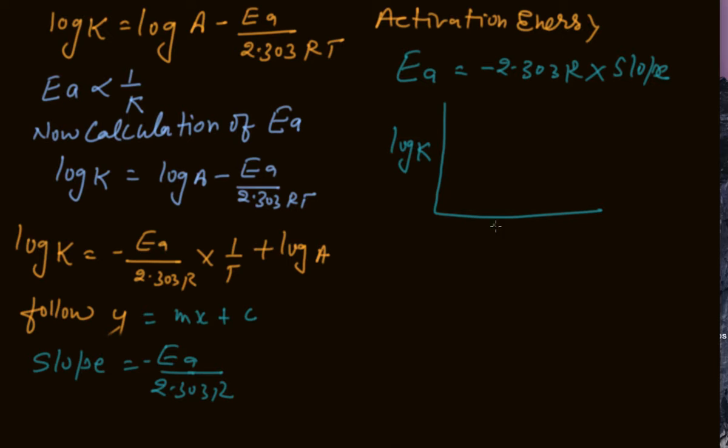This is log K on the y-axis, 1 by T on the x-axis, and this is representing the slope is equal to minus Ea by 2.303 R.